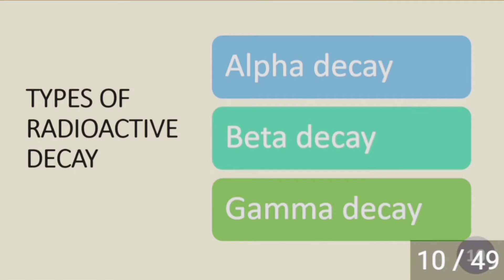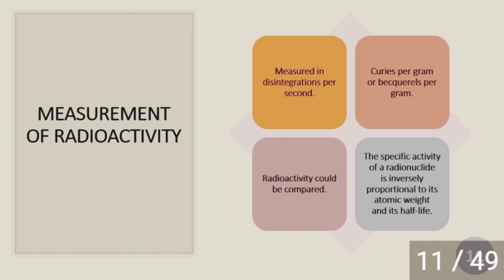There are three types of radioactive decay: alpha, beta, and gamma. Our main topic is measurement of radioactivity. Radioactivity is measured in disintegrations per second, which could be curies per gram or becquerels per gram. We measure radioactivity so that it can be compared — if given two radionuclides, only by measuring will we be able to determine which is more radioactive. The specific activity is a physical property of a radionuclide; it is inversely proportional to its atomic weight and its half-life.